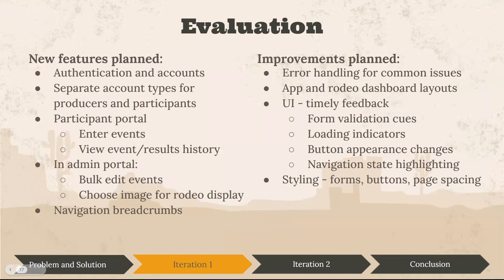Based on the feedback and data gathered, we planned new features and improvements. New features included authentication and accounts, with different account types for participants and producers, so administrators have their own portal and participants have an easy system to apply to rodeos. Navigation breadcrumbs was also important to help illustrate the information architecture better. Planned improvements included error handling for common issues, app and rodeo dashboard layouts, UI improvements, and upgraded styling to make everything more professional and nicer to use.